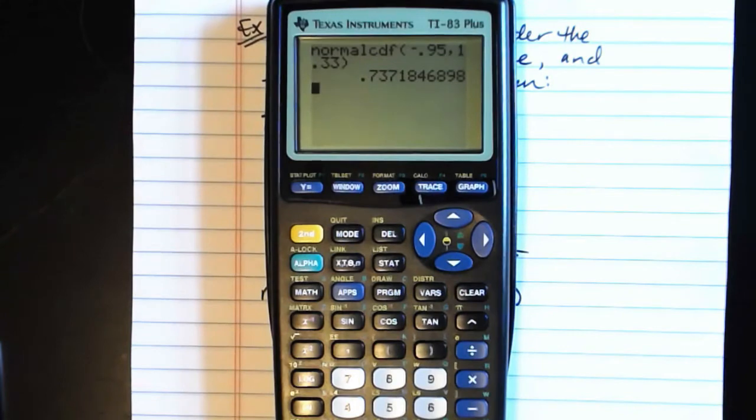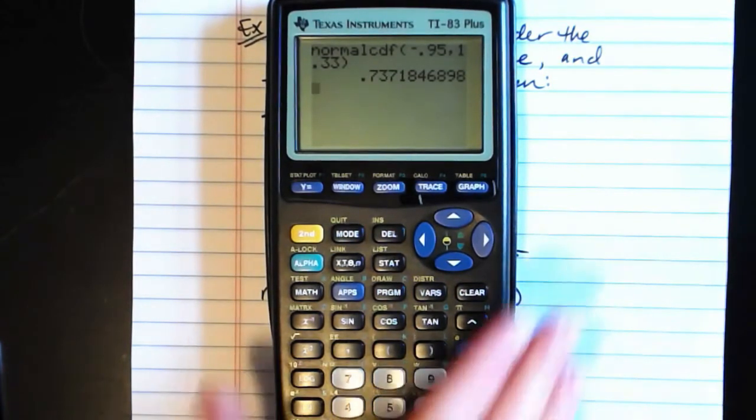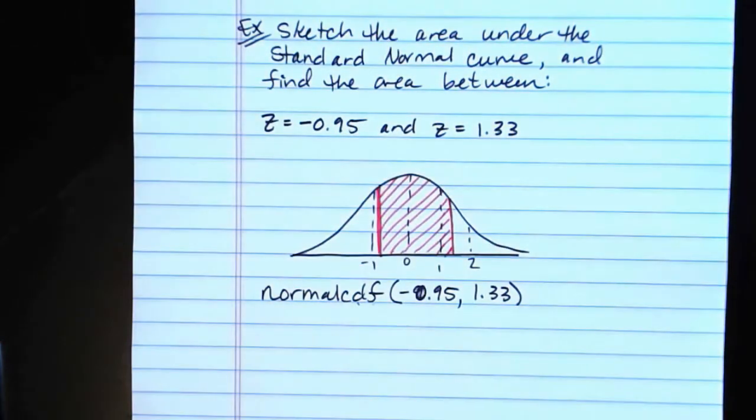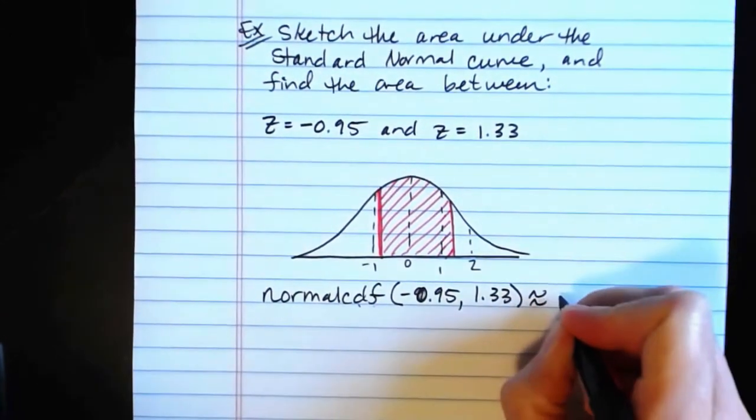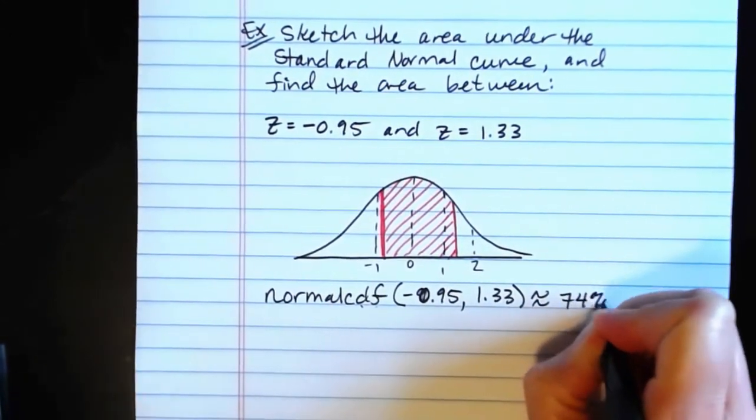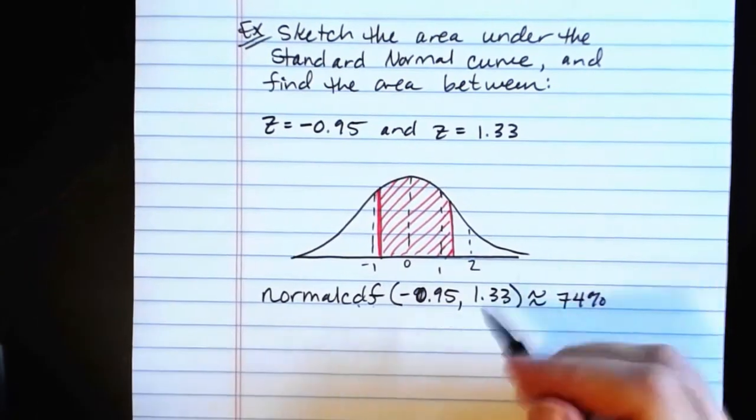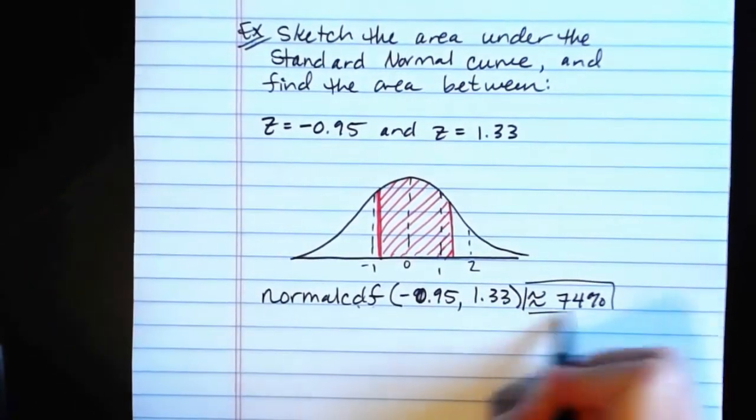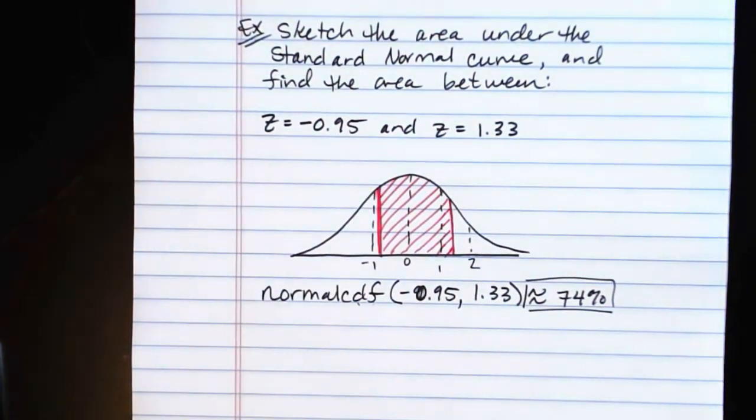And we find that we get 0.74, roughly 74%, which seems totally reasonable. That's above our 68% and below the 80 whatever it was I said that we were expecting it to come in underneath. That seems perfectly reasonable based on the sketch that we have.